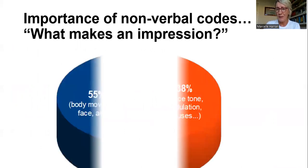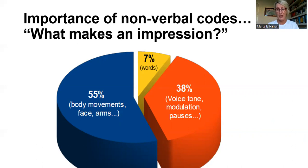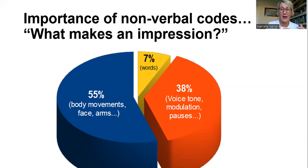Why is non-verbal code so important? What makes an impression: 55% is body movements and non-verbal language — your face, arms, and gestures. Only 7% is your actual words. And 38% is how you speak — your voice, tone, modulation, and pauses. So your voice along with body language and gestures make the impression. Non-verbal is very important for communication.